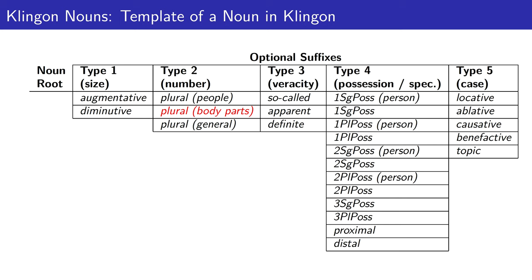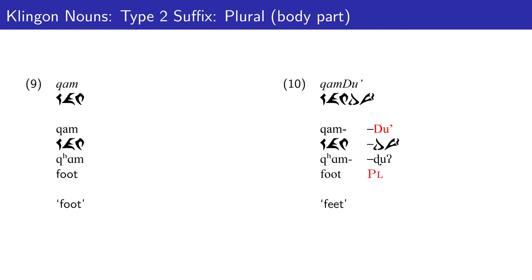Alternatively, if we want to mark a noun as plural and the noun refers to a body part, we must use the alternate type 2 suffix 'ko', marking a body part as plural. Here we have 'kam', the word for foot, and 'kam-ko' marks foot as plural, giving us the translation feet.